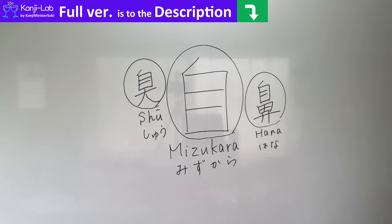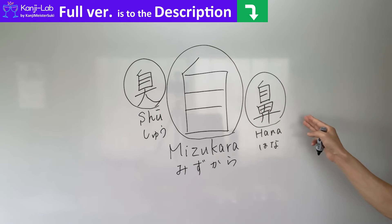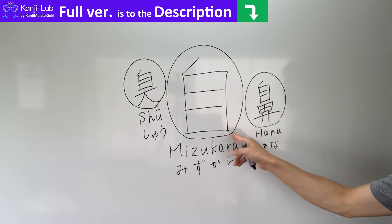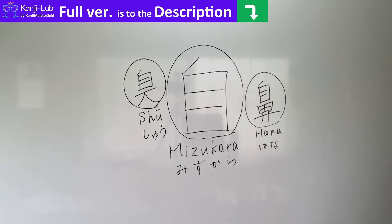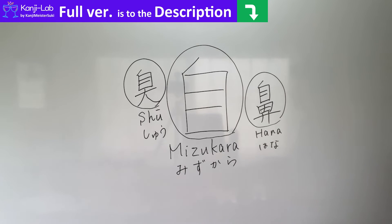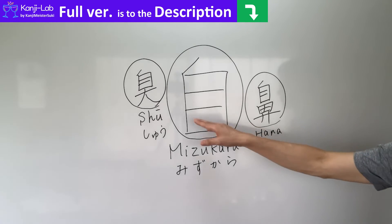But the kanji for HANA does not belong to this radical. It belongs to the radical HANA. However, it is listed here because it is related to the radical MIZUKARA.